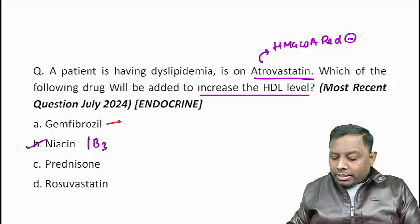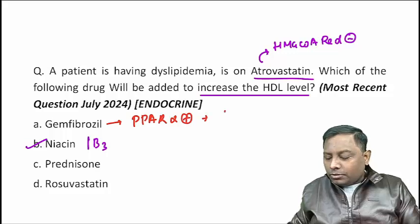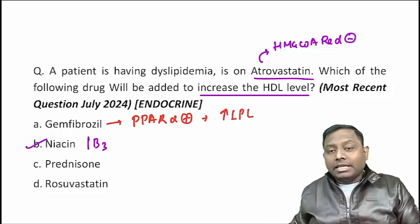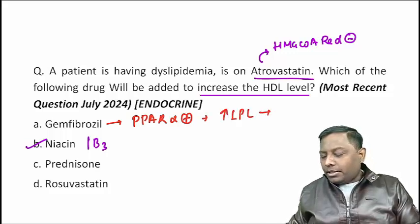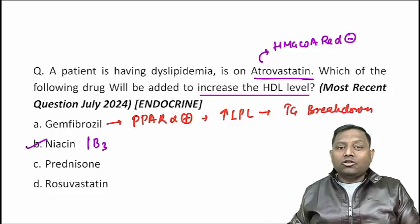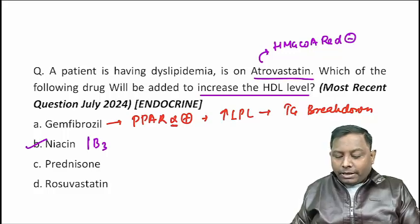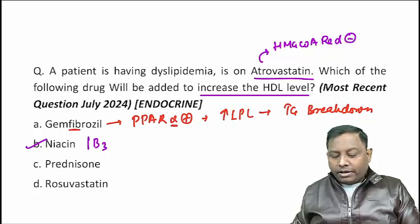Fibrate drugs are PPAR-alpha agonists that increase the level of lipoprotein lipase, which causes triglyceride breakdown. So the best drug for hypertriglyceridemia is fibrates. All drugs ending in '-fibrate' or '-fib' fall into this class — they are all fibrates.